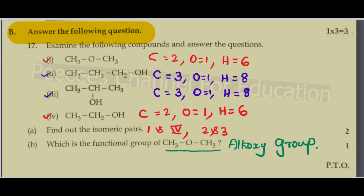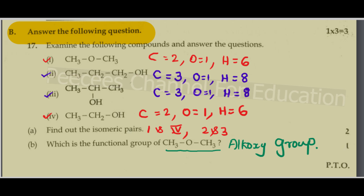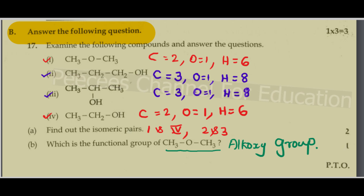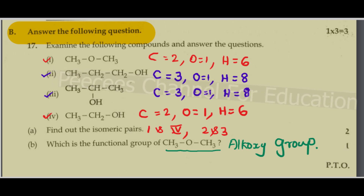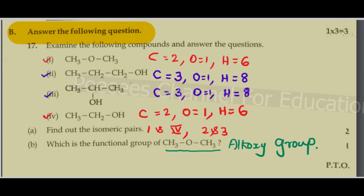Examine the following compounds and answer the questions. CH₃OCH₃. Find out the isomeric pairs. Isomers have the same elements but different properties.